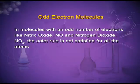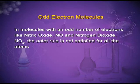Odd electron molecules — nitric oxide (NO) has an odd number of electrons. Similarly, in nitrogen dioxide (NO₂), the octet rule is not satisfied for all atoms.